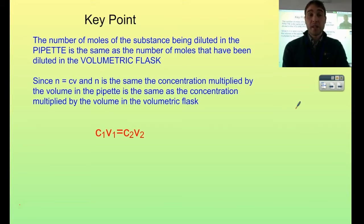The key point to think about is the number of moles of the substance being diluted in the pipette is the same as the number of moles that will end up in the volumetric flask. You're changing concentration, not changing the number of moles. So the concentration and volume multiplied together in the pipette has to equal the concentration and volume multiplied together in the volumetric flask. What is different is the volume of the solution.